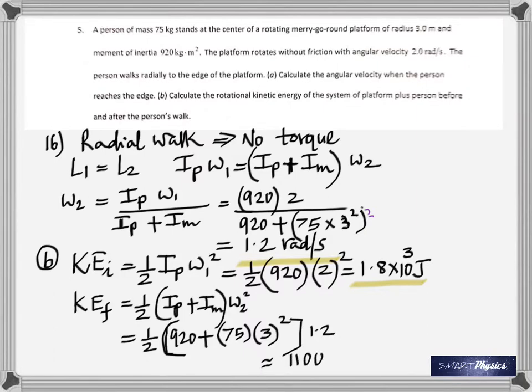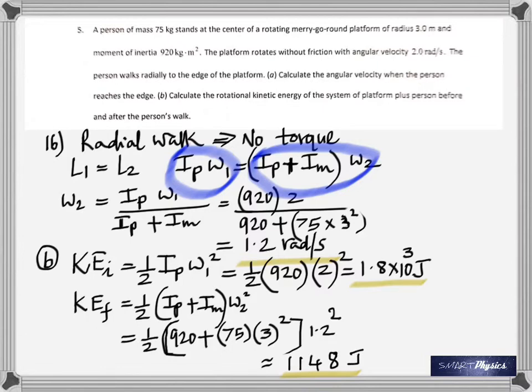That gives me approximately 1100. Did I forget to put a square again? Check this also out because right now I do not see a square here. I had forgotten to put the square there, so it's 1148 joules. The reason why it's smaller is because the angular velocity has gone down.